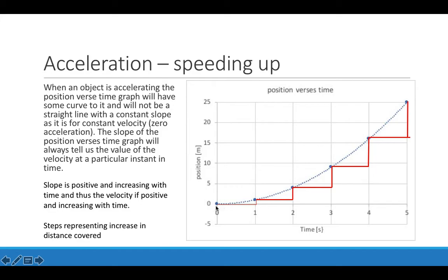Remember that if the velocity were constant, the position versus time graph would be a straight line with a constant slope.